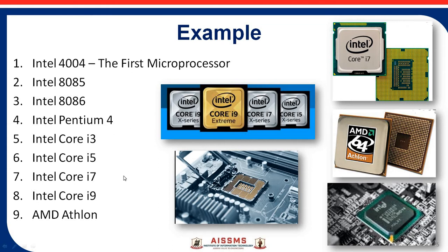These are examples of microprocessors. I think you are all familiar with the Intel Core i9, i7, i5, i3 — we all use this kind of microprocessor nowadays. The i9 is the latest microprocessor coming in the next few years. Before that, there was Intel 4004, which is the first microprocessor, then Intel 8085, Intel 8086, and Pentium 4. These are some chips and integrated circuits of different microprocessors.